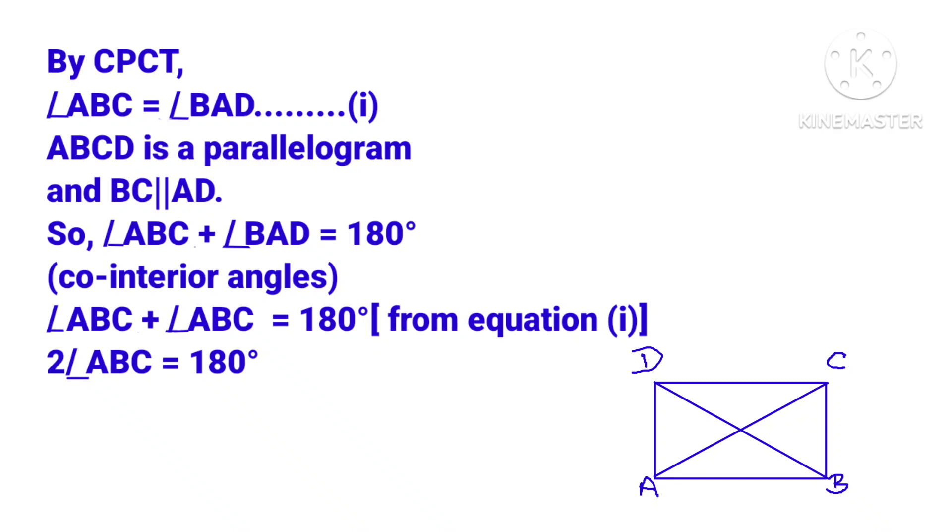By CPCT, angle ABC is equal to angle BAD. Now, ABCD is a parallelogram and BC is parallel to AD. So, angle ABC plus angle BAD is equal to 180 degrees, co-interior angles.